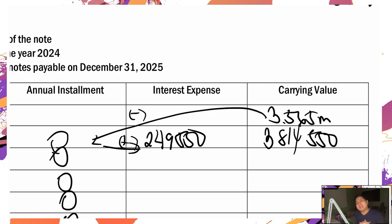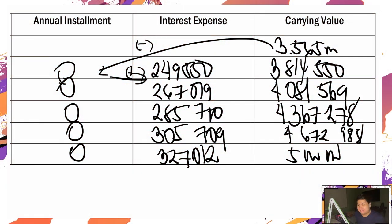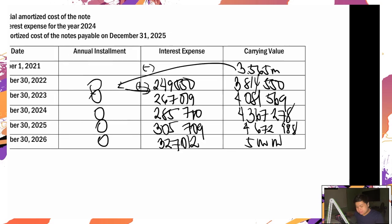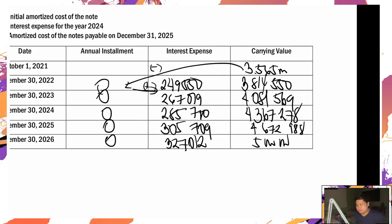Paulit-ulit lang yan hanggang sa mapuno. Let's fast track. Yan yung ating nabuong amortization table.